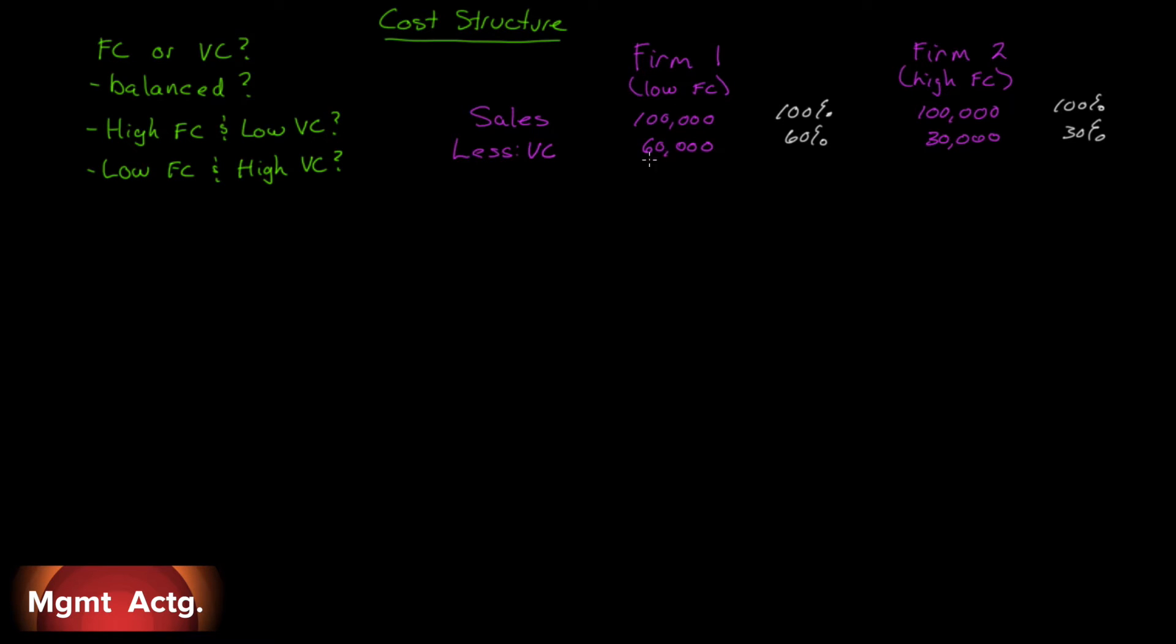The variable expense ratio for Firm 1 is 60%, where it's only 30% for Firm 2. Our contribution margin out of Firm 1 is $40,000. Our contribution margin out of Firm 2 is $70,000, because it made the decision to have low variable costs. Firm 1 has a contribution margin ratio of 40%. $0.40 of every dollar goes towards fixed costs and profit. Whereas Firm 2 has a contribution margin ratio of 70%. $0.70 of every dollar sold goes towards fixed costs and profit.